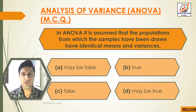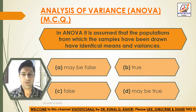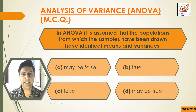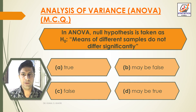Next question: In ANOVA, it is assumed that the population from which the samples have been drawn have identical means and variances. Option A: May be False. Option B: True. Option C: False. Option D: May be True. Answer: Option B, True.